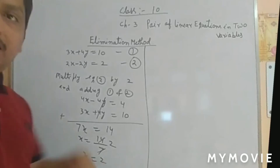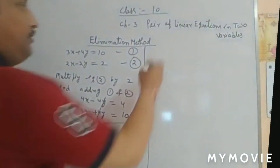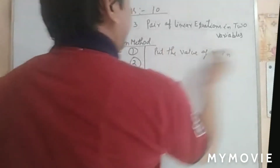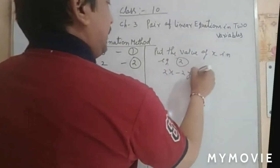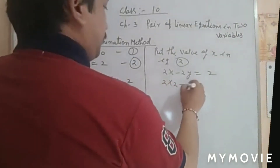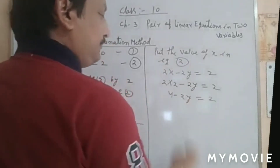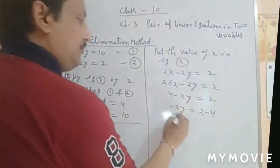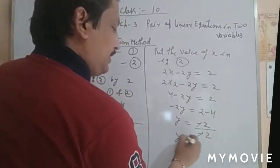Now we put the value of x into either equation 1 or equation 2 to find y. Substituting x = 2 into equation 2, which is 2x − 2y = 2: 2×2 − 2y = 2, so 4 − 2y = 2. Then −2y = 2 − 4 = −2, so y = −2/−2, which gives y = 1.